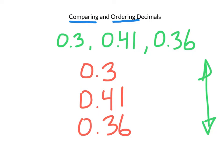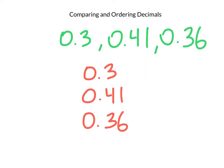Now you'll see that I have lined up the decimals. That's really, really important. If I line up the decimals, everything else should make sense. So now that I have my decimals lined up and my numbers all written vertically — meaning up and down — it's easier to compare. I can see that in the ones place value, all these numbers have a zero. And then they all have a decimal.